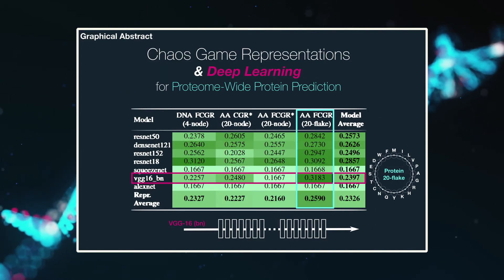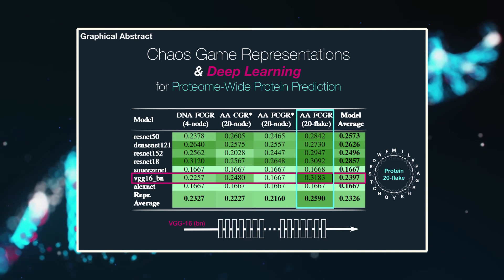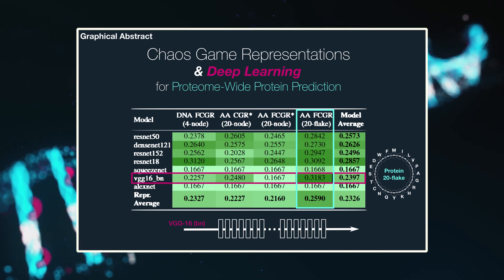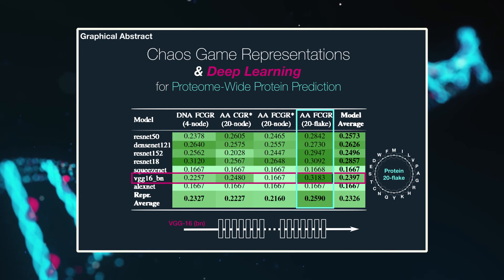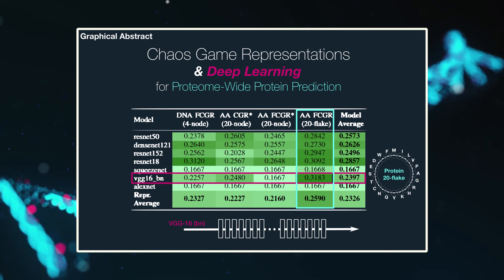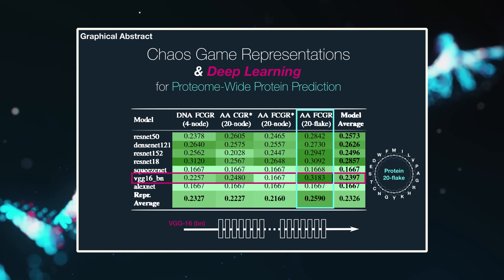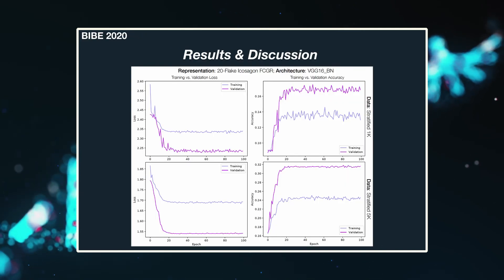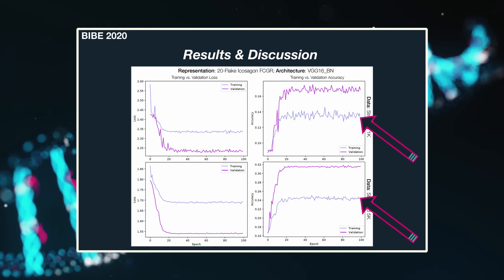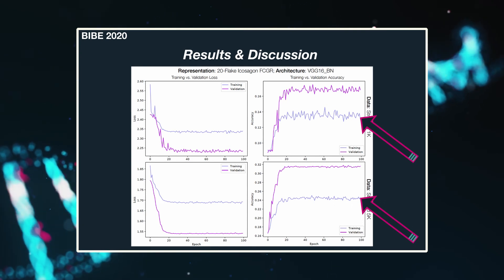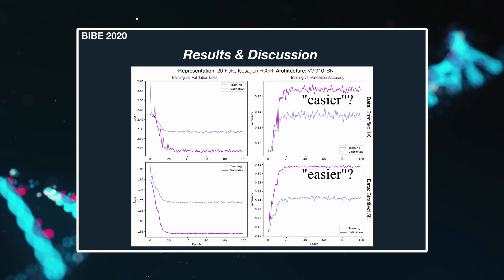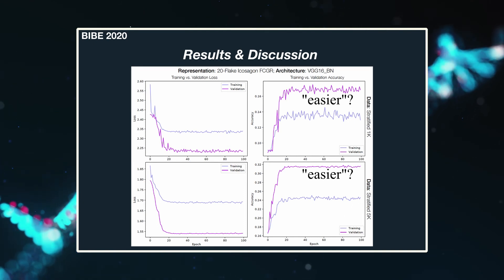With the highest performing model and representation combination — that is, VGG16 with batch normalization and the 20-flake FCGR — we inspected the training accuracy and loss with respect to each training epoch for both datasets. Interestingly, a consistent improvement in validation performance over training performance is observed, suggesting that the validation set consists of an easier set of samples than those in the training set.